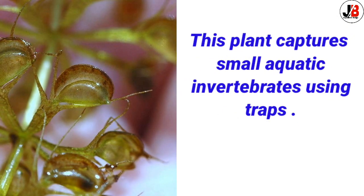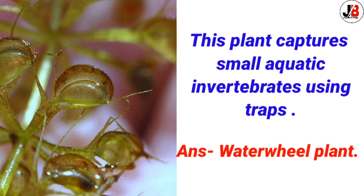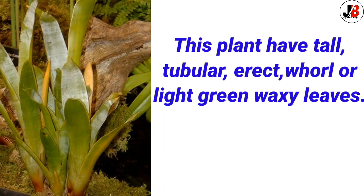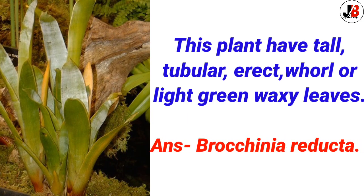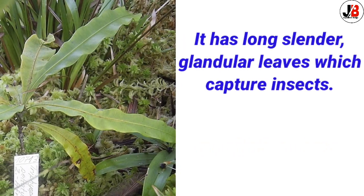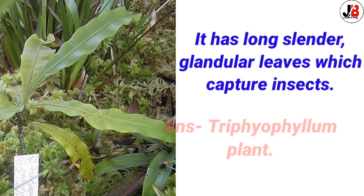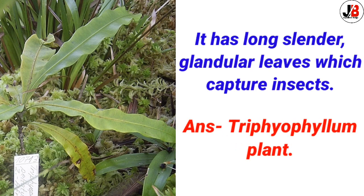This plant captures small aquatic invertebrates using traps — the answer is Water Wheel Plant. This plant has tall tubular, erect, woolly or light green vacuoles — the answer is Brocchinia reducta. It has long slender glandular leaves which capture insects — the answer is Triphyophyllum Plant.